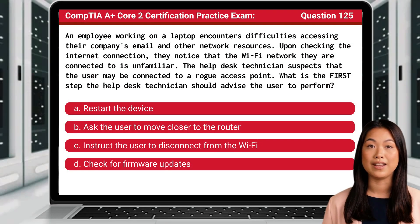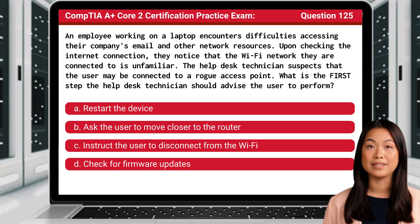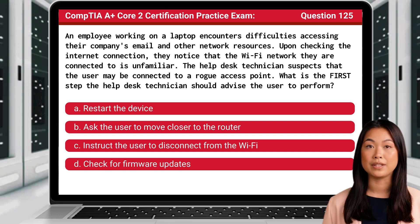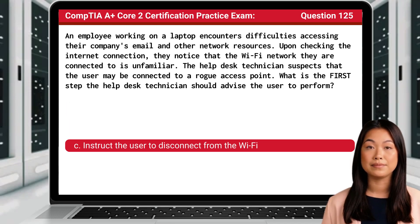Question 125. An employee working on a laptop encounters difficulties accessing their company's email and other network resources. Upon checking the internet connection, they notice that the Wi-Fi network they are connected to is unfamiliar. The help desk technician suspects that the user may be connected to a rogue access point. What is the first step the help desk technician should advise the user to perform? The answer is C: Instruct the user to disconnect from the Wi-Fi.